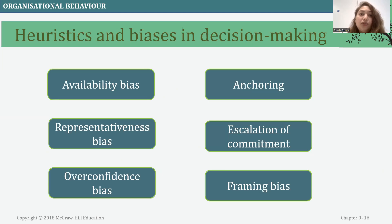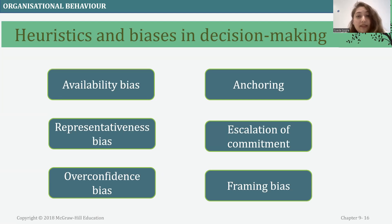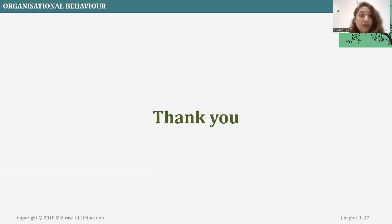Looking at biases and heuristics in decision making: these form due to availability bias, representativeness bias, overconfidence bias, anchoring, escalation of commitment, and framing bias. Thank you so much for listening.